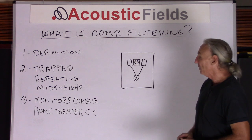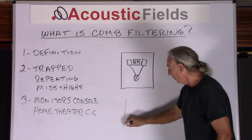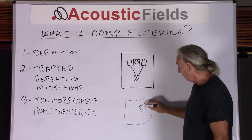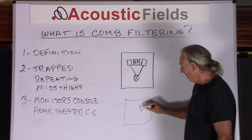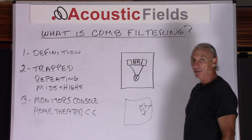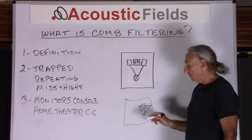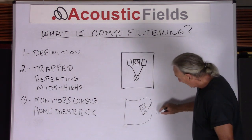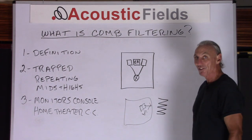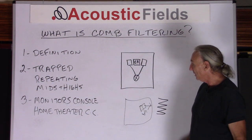Let's define it first. What is comb filtering? Comb filtering is a series of unwanted reflections between a speaker or a sound producing device and a boundary surface, or any surface. It's a series of back and forth reflections that are trapped mainly for middle and high frequencies.